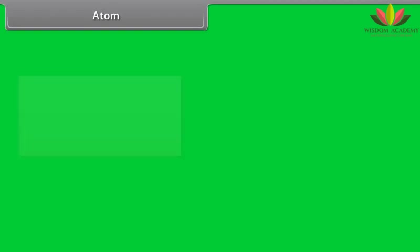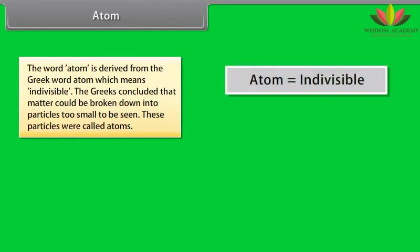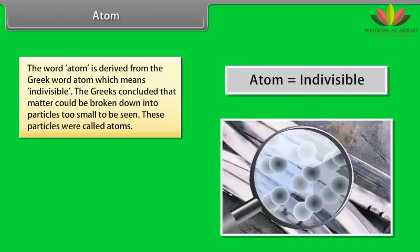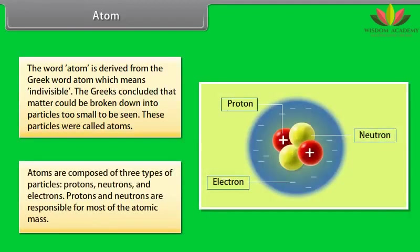Atom. The word atom is derived from the Greek word atom, which means indivisible. The Greeks concluded that matter could be broken down into particles too small to be seen. These particles were called atoms. Atoms are composed of three types of particles: protons, neutrons and electrons.